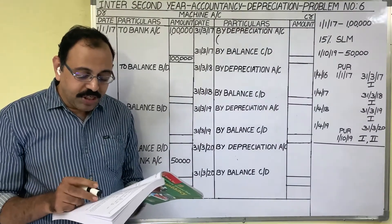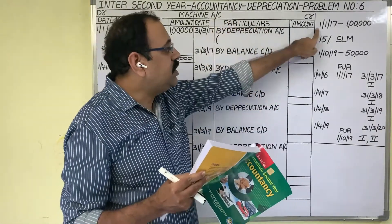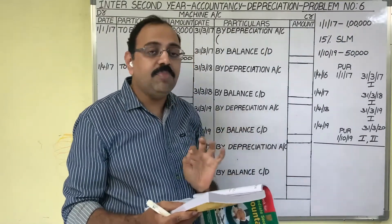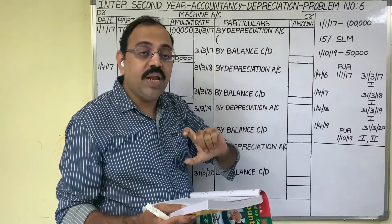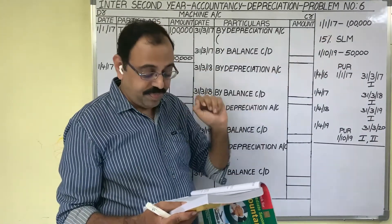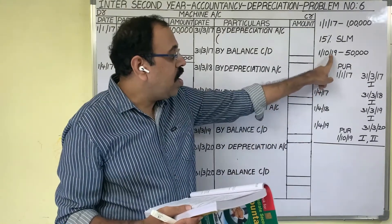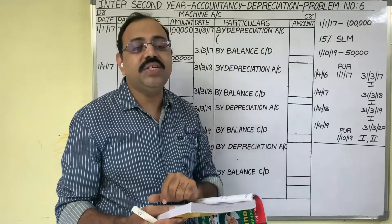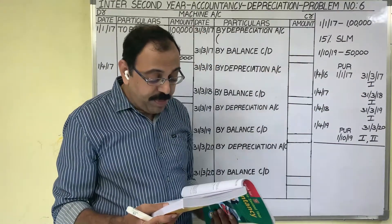Karthik and Company bought a machine on 1st January 2017 for 1 lakh rupees. Depreciation is provided at 15% under the straight line method, also called the original cost method or fixed installment method. Another machine was purchased on 1st October 2019 for 50,000 rupees. The company closes its accounts every year at the end of the financial year — starting 1st April and ending 31st March. We are asked to prepare the machine account for 4 years.